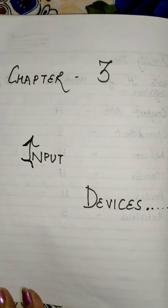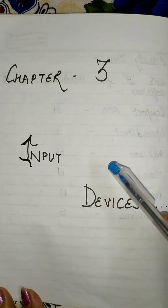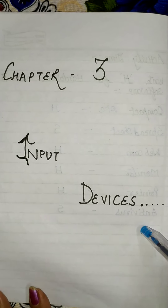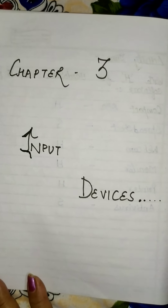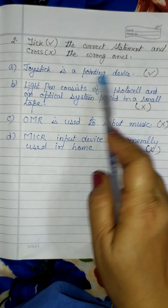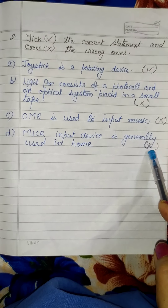Good afternoon students. Today we will do some exercises from Chapter 3, that is Input Devices. Today we will do 'tick the correct statement and cross the wrong ones.' This heading must be written with black pen, and the rest of the statements with blue pen. True, false, tick, or cross must also be written in black pen.